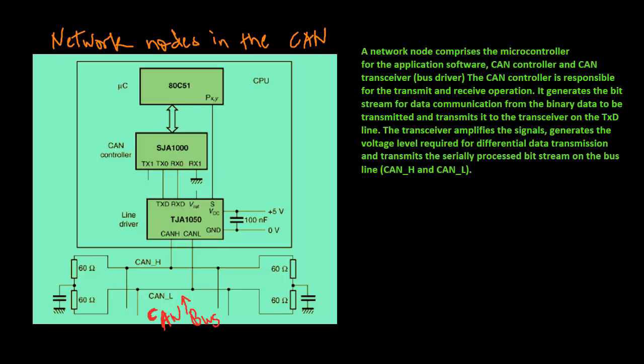The CAN network node comprises the microcontroller for the application software, CAN controller and CAN transceiver. The CAN controller is responsible for the transmit and receive operation. It generates the bitstream for data communication from the binary data to be transmitted and transmits it to the transceiver on the TXT line.